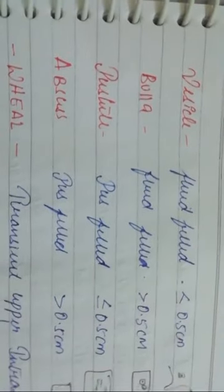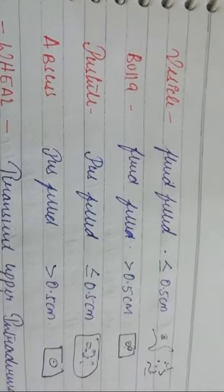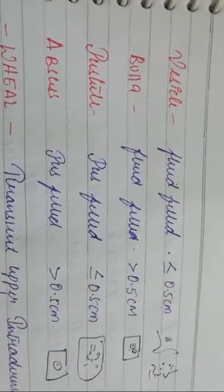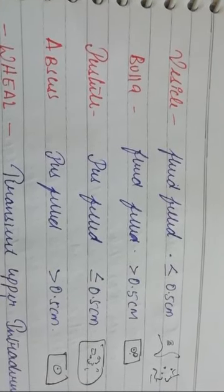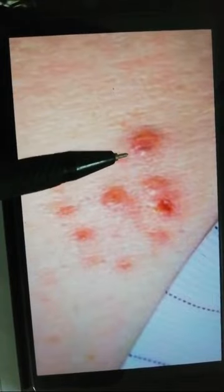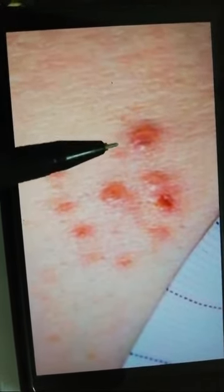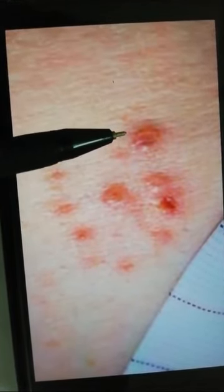Next is bulla — also fluid-filled, but more than 0.5 centimetres. Whenever you speak about bulla, think: fluid-filled and more than 0.5 centimetres. So vesicle is fluid-filled less than 0.5cm, and bulla is fluid-filled more than 0.5cm.